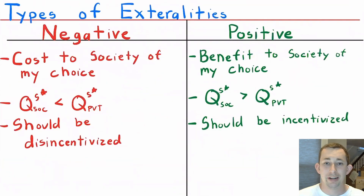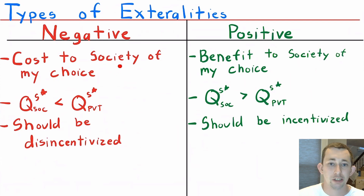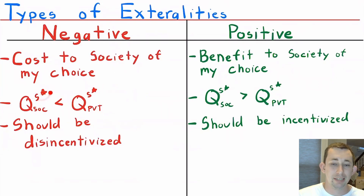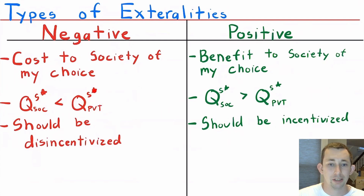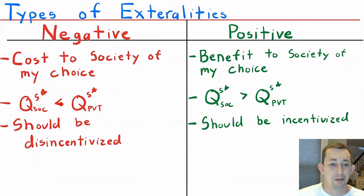Let's be more concrete about the different types of externalities — negative and positive. A negative externality means there is an extra cost to society of my choice that I am not taking into account. So the quantity that society would ideally like, Q_society*, is less than the quantity of the private supply. Society would prefer a lower quantity of music from my car than actually exists, so we would want to disincentivize me from blasting music.